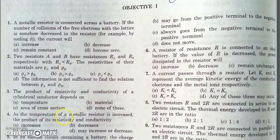Similarly, in the fourth question, as temperature increases, we have to find what will happen to their product. Again, the product will remain constant and equal to 1, because by definition resistivity is the reciprocal of conductivity — resistivity equals 1 divided by conductivity.